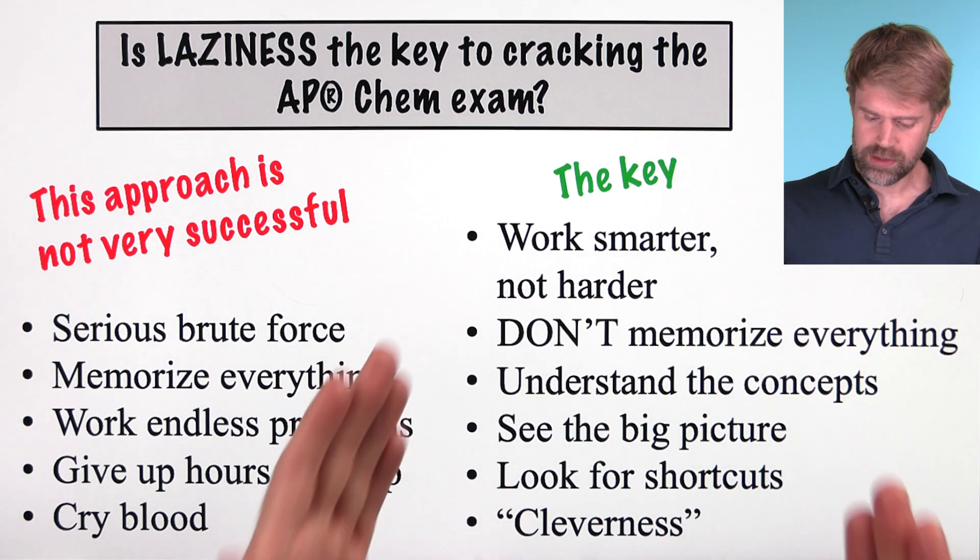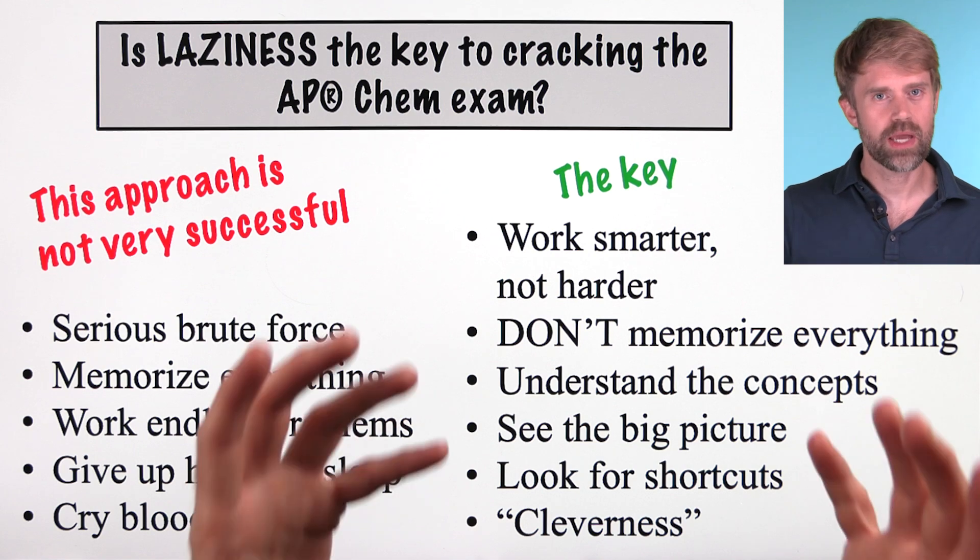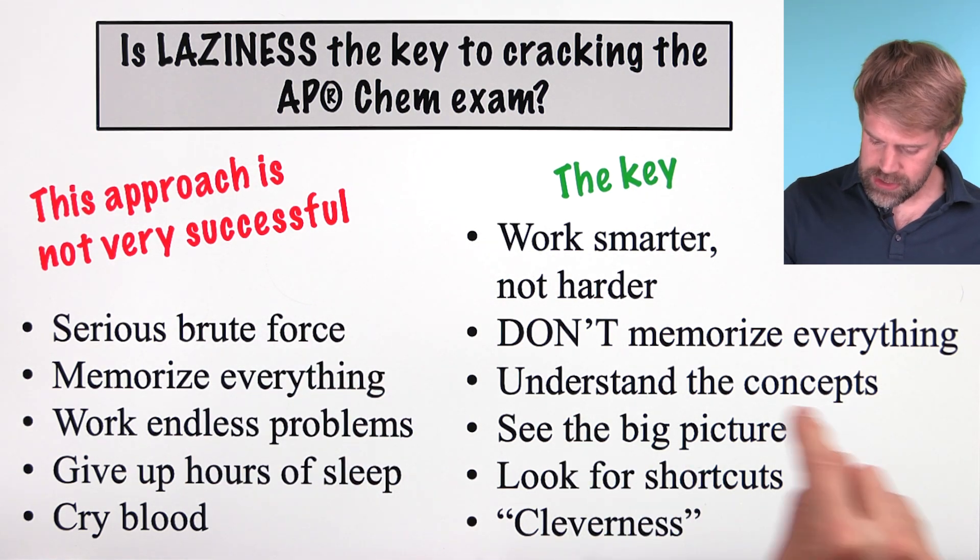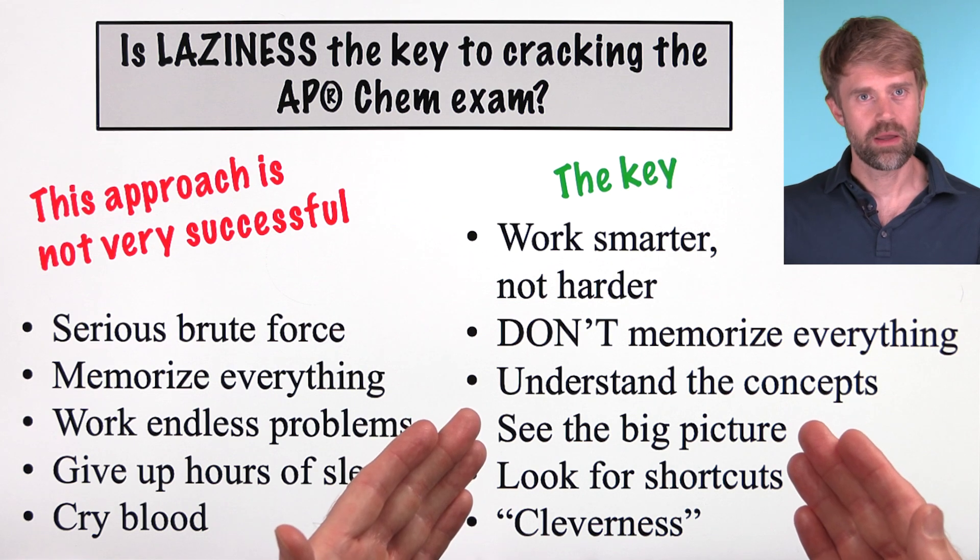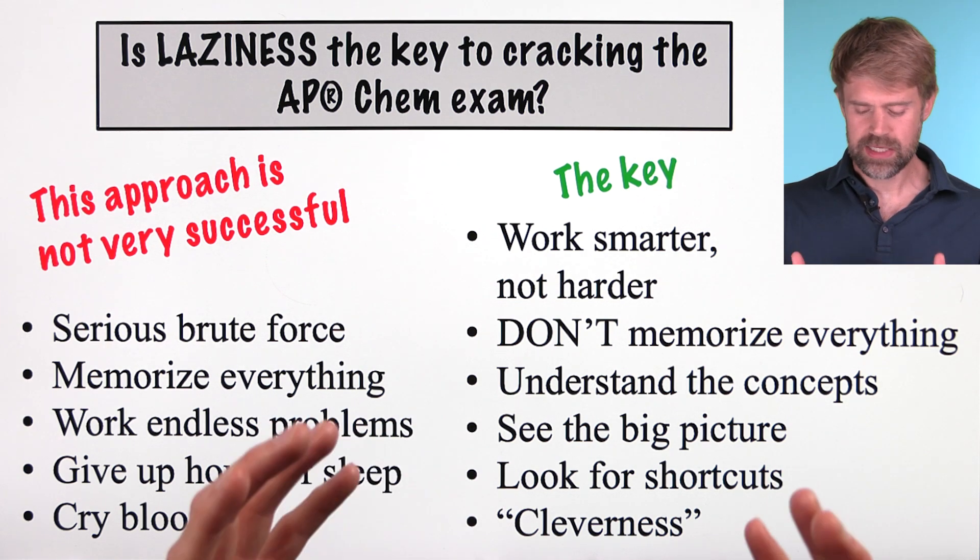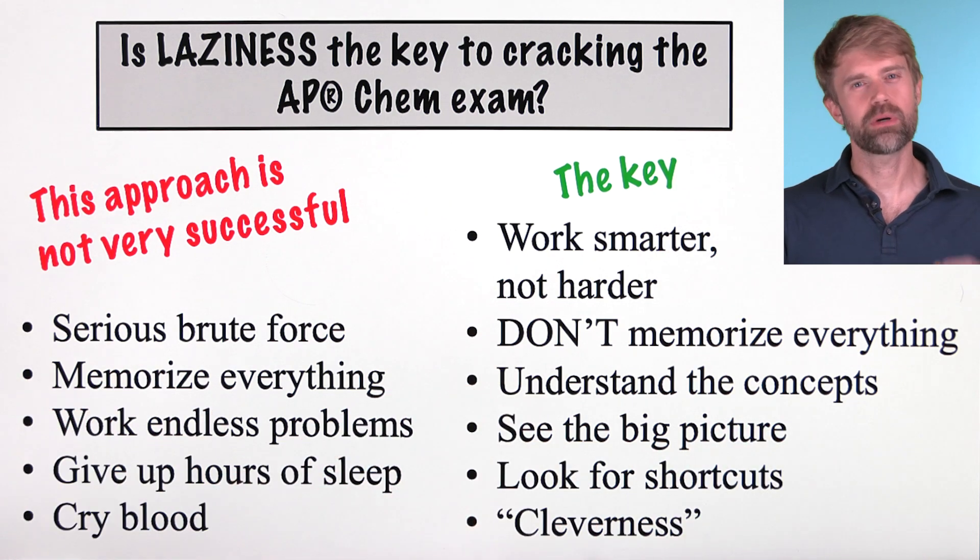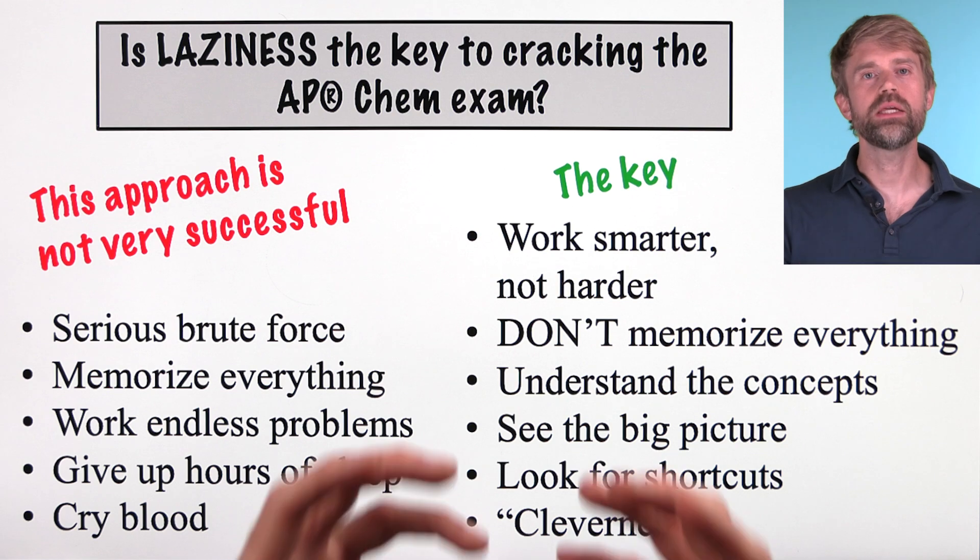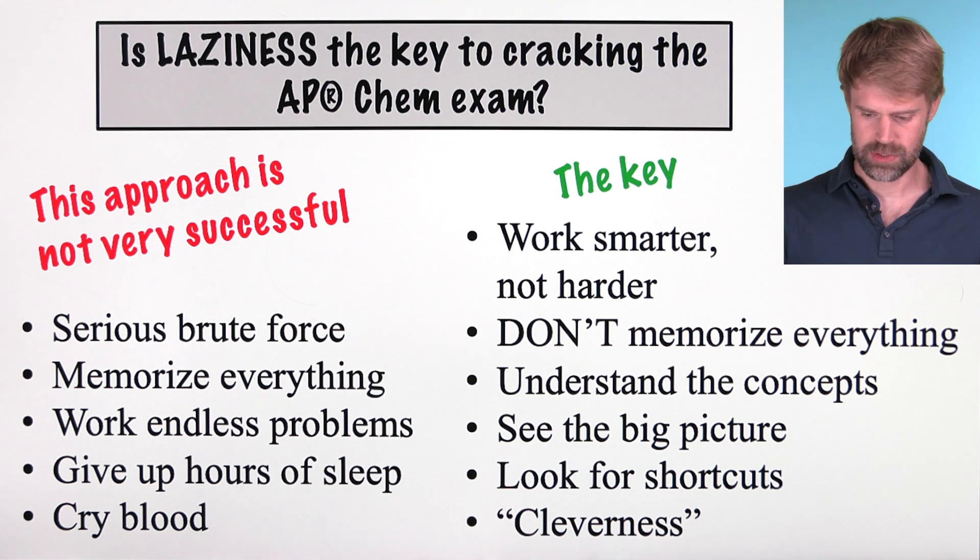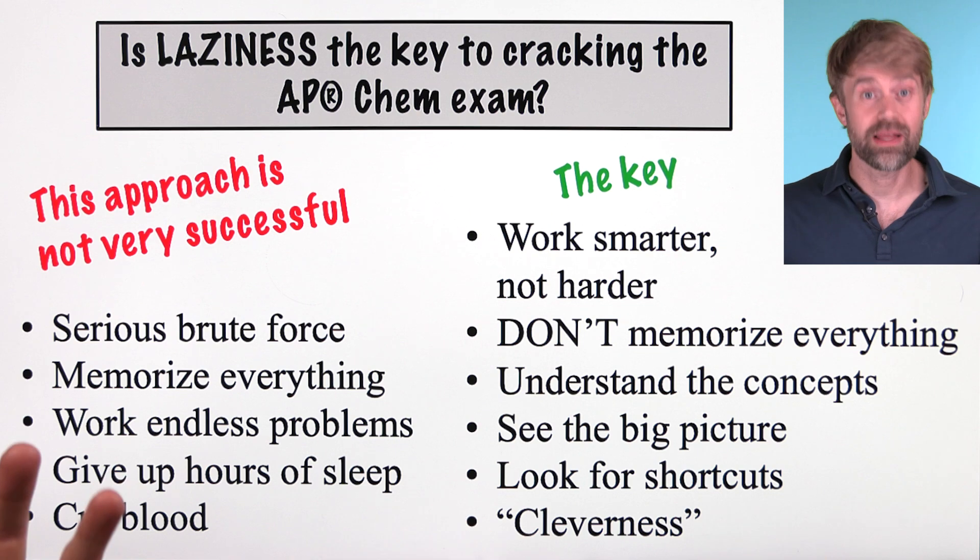Students who tend to do really well on the AP Chem Exam, they don't memorize everything. Instead, they work to understand the concepts and see the big picture. This lets them see which details are important and which aren't. And because of that deep understanding, they can often see shortcuts and find easier ways of solving problems. And there's also an element of what we might just call cleverness.